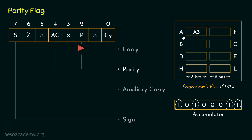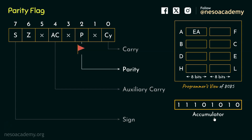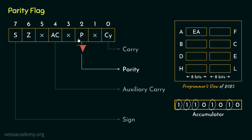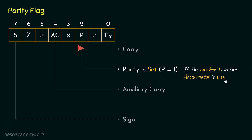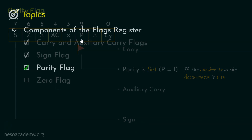Let's consider another value. Say the accumulator now contains EA hex. A is 1010, and E is 14 in decimal, which in binary is 1110. Counting the number of ones: 1, 2, 3, 4, 5 — that's odd. So the parity bit is going to be reset to 0, or the flag is not going to be raised. To summarize: P becomes 1 if the number of ones in the accumulator is even. As the user doesn't really care about the number of ones after an arithmetic operation, practically this flag is not of much use. That's all about the parity flag.